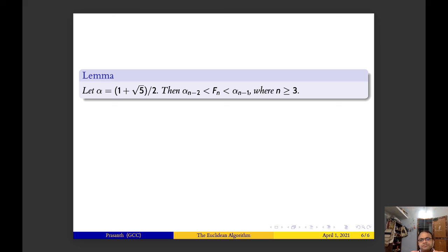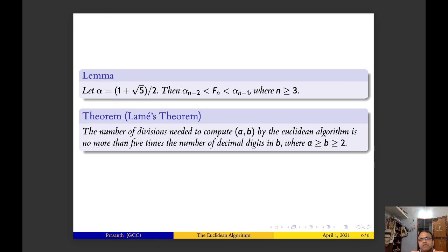Next is Lamé's theorem: the number of divisions needed to compute (a,b), the gcd of a,b by the Euclidean algorithm, is no more than five times the number of decimal digits in b where a greater than or equal to b greater than or equal to 2. I think proof of these two lemmas are not included because they seem to be very much long, so most probably examinations might not ask this.